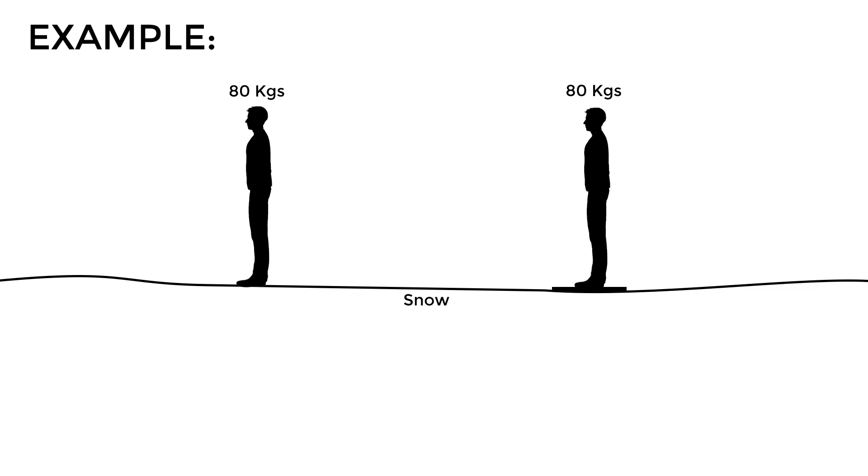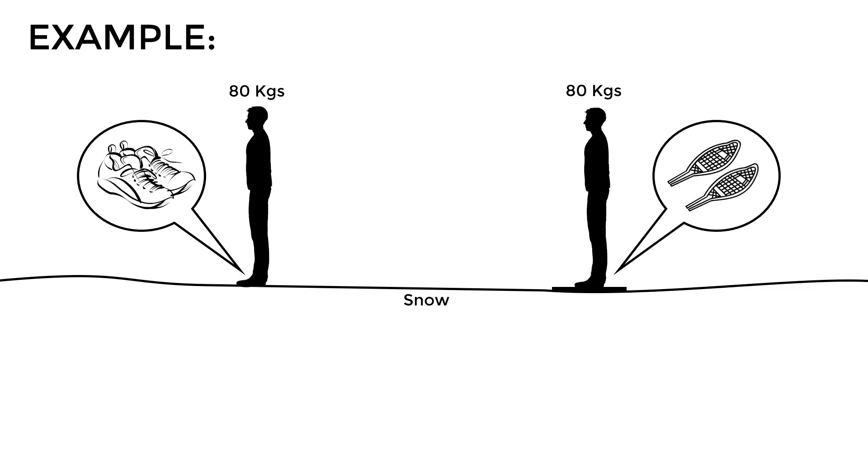Let's look at a couple of examples to better understand this relationship between force and area. Suppose that two people of equal weight are standing on a loose snow surface. Now, the fact that they both weigh 80 kilograms implies that the force they will exert on the snow will be the same in both cases. However, the difference is that the person on the left is wearing regular shoes, while the one on the right is wearing special snow footwear with a much larger sole.